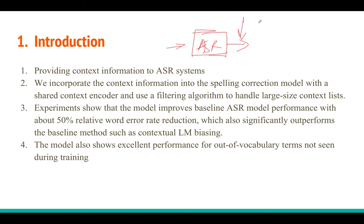How do you handle this? One approach is to create a contextual language model — you take text data where names, addresses, and domain-specific words appear, build a language model from it, and use it during decoding. Sometimes it works, sometimes it may not. But this paper proposes a different approach. The main reason is we want the model to predict important words, also known as out-of-vocabulary (OOV) words, which are not present during training.